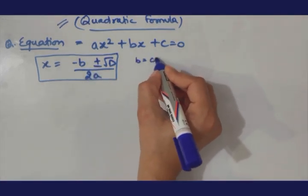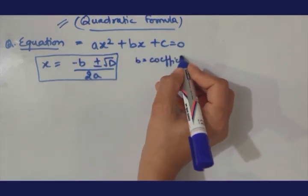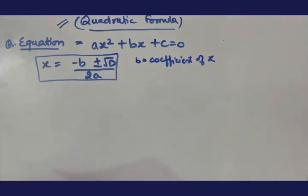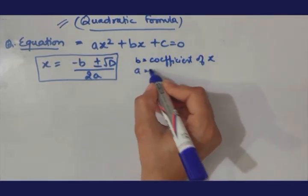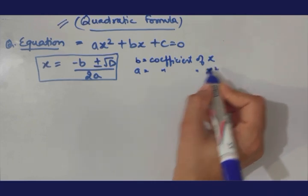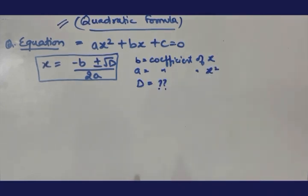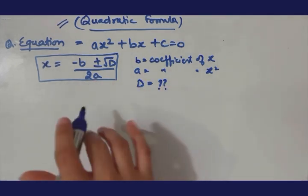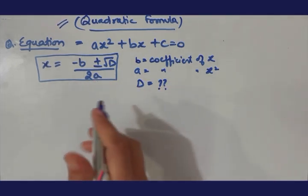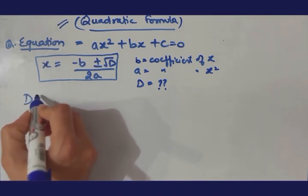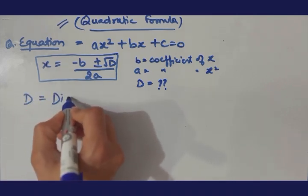Yeh aapka quadratic formula. Abhi haan par, aapko b pata hai b is what coefficient of x, aapko a bhi pata hai a is coefficient of x square, but you don't know what is D. D ka aapka idea bhi nahi hooga abhi tak ki D haan par kis liye use hua hai. So D is basically what bachay, D stands for discriminant.